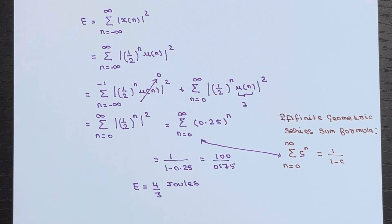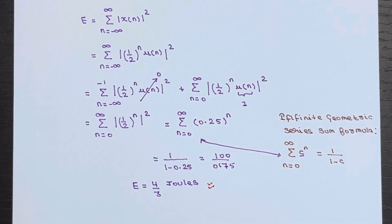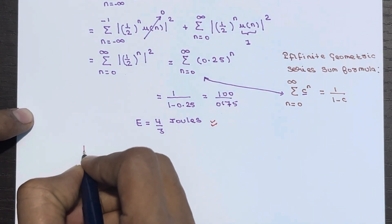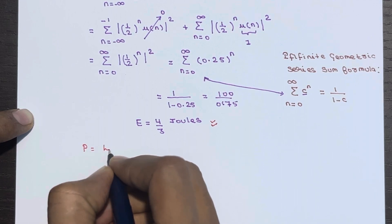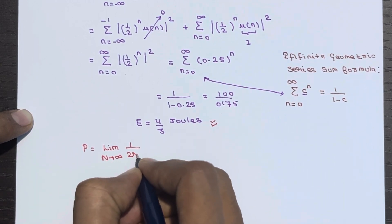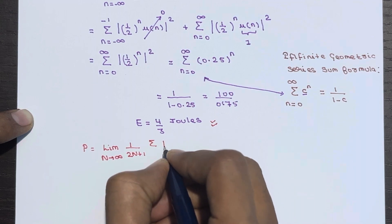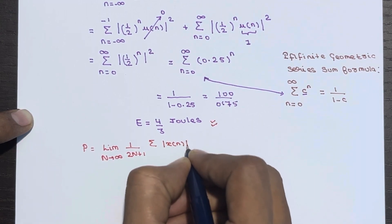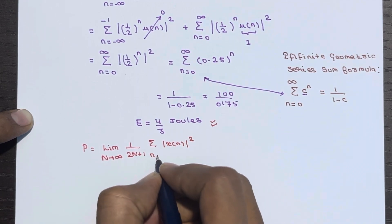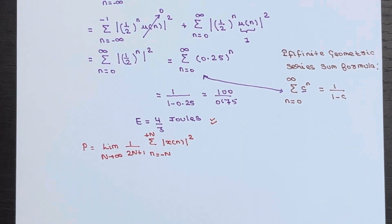Now let's calculate the power of the discrete time signal x(n). To calculate the average power, the formula is: P = limit as N → ∞ of [1/(2N+1)] times the summation of |x(n)|² over the limit n = −N to +N.